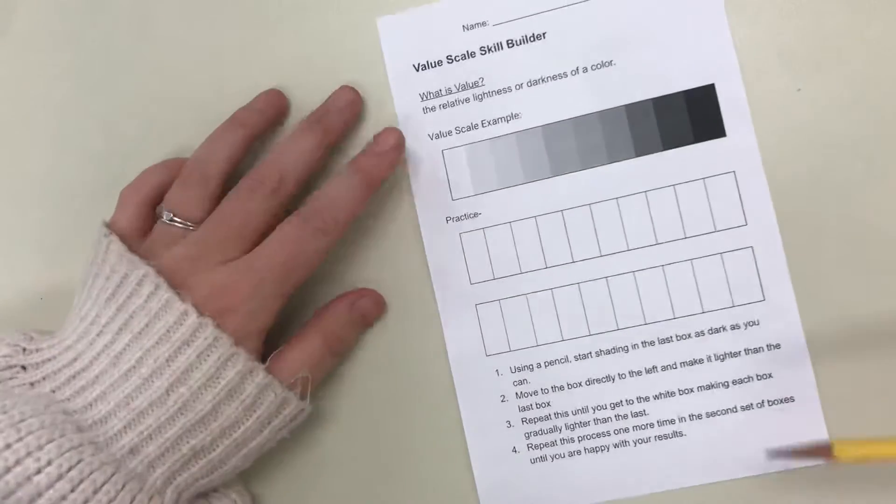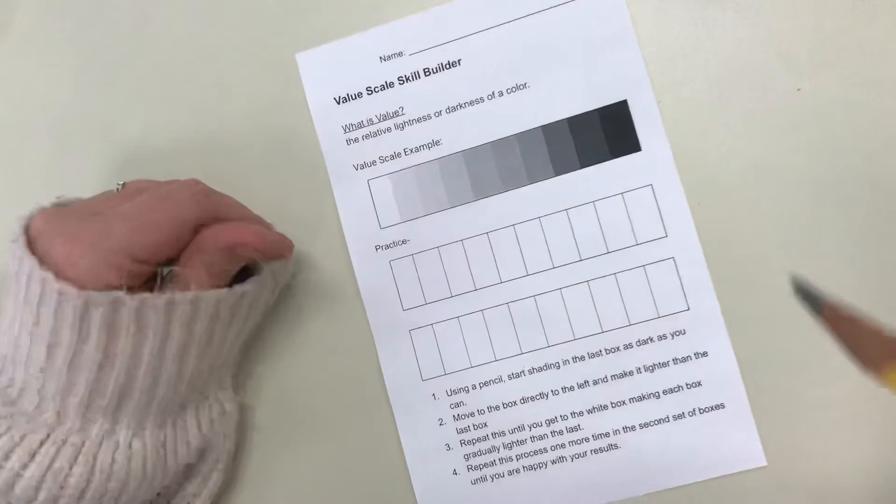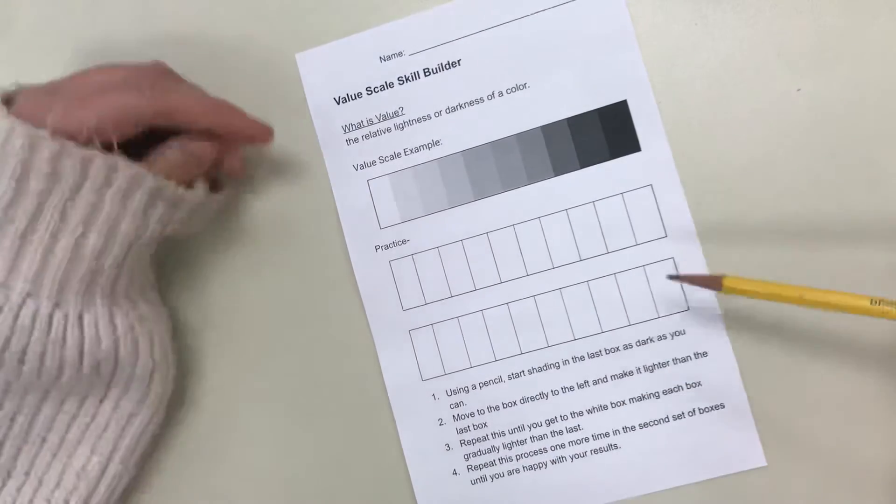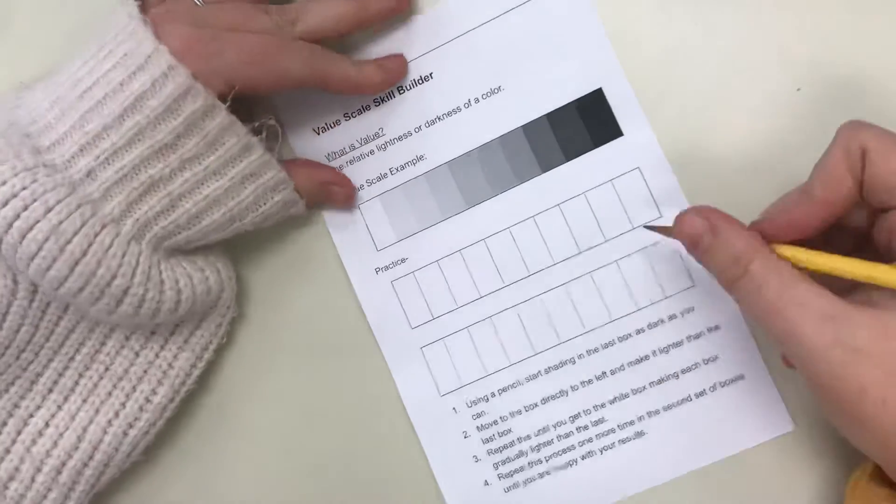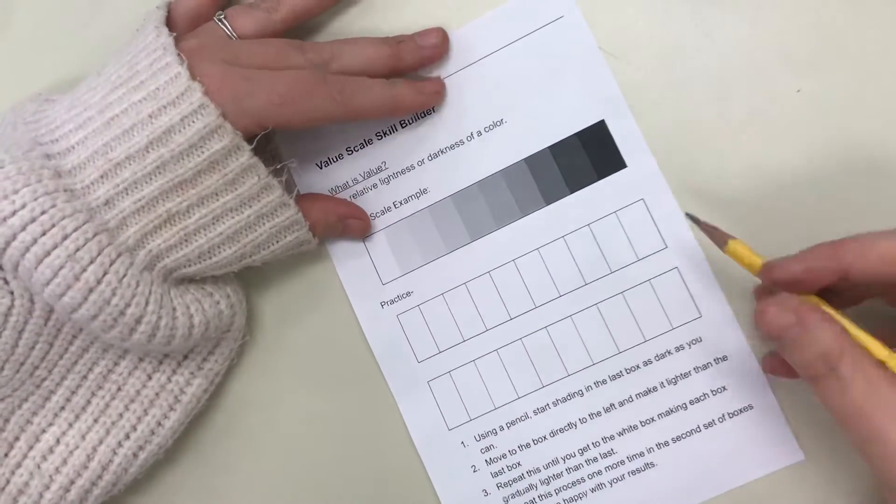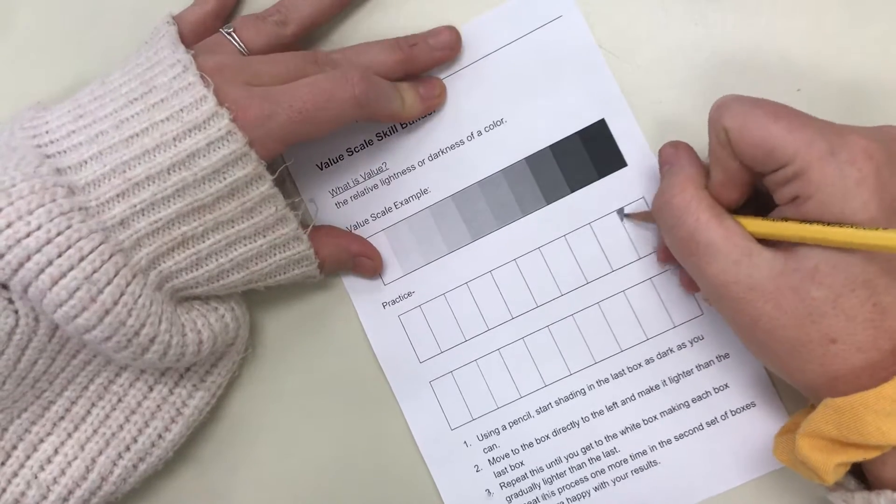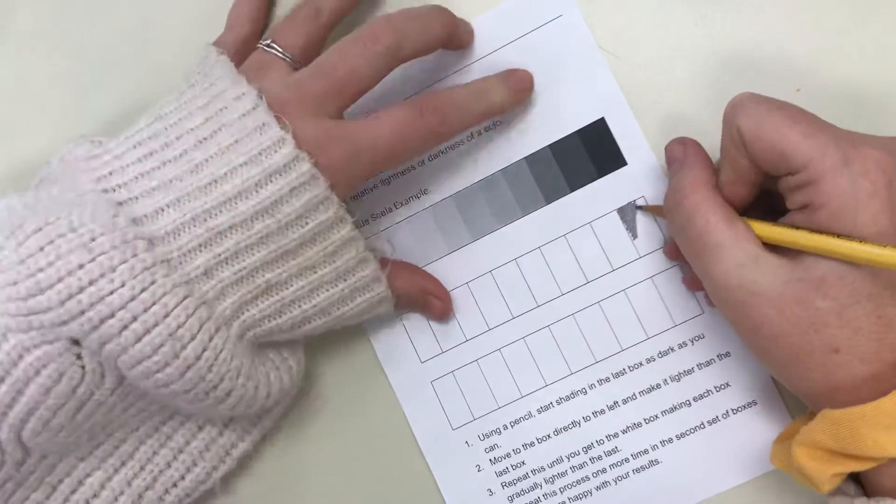Your first step is to take a pencil. It doesn't have to be super sharp because you're gonna end up dulling it right away as you start filling in this darkest spot. Your first step is to start all the way on the far side and make your darkest color first. So I'm going to fill this in as dark as I can.